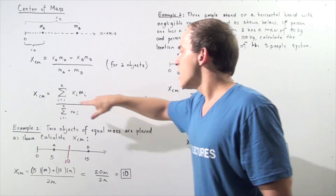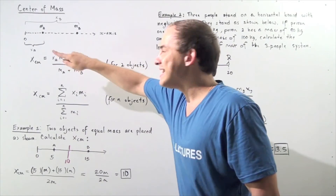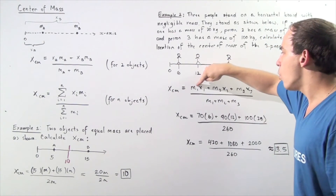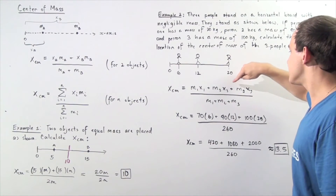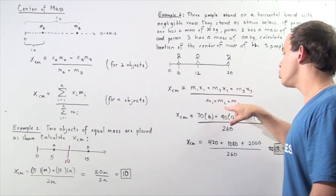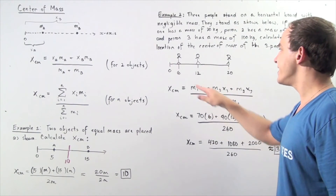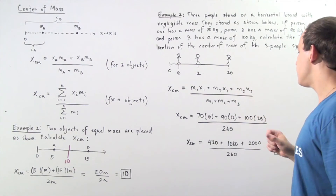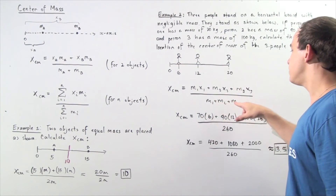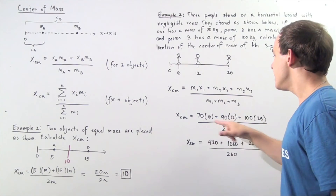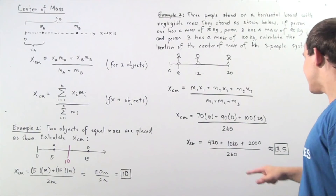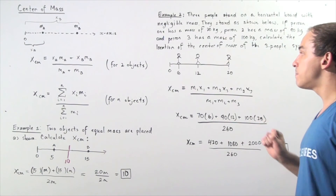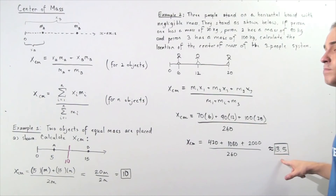Using the formula from i equals 1 to n equals 3: XCM equals M1X1 plus M2X2 plus M3X3, divided by M1 plus M2 plus M3. Substituting: M1 is 70, X1 is 6; M2 is 90, X2 is 12; M3 is 100, X3 is 20; and the total mass is 70 plus 90 plus 100, which equals 260. Multiplying and summing gives a center of mass location of approximately 13.5 units from the zero mark.